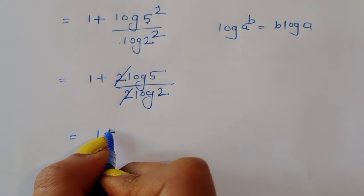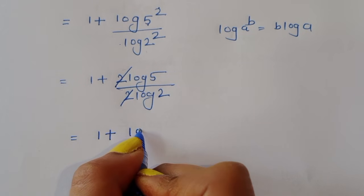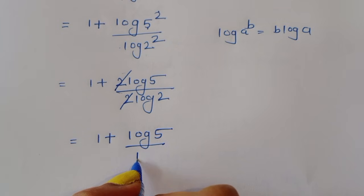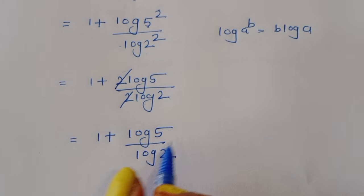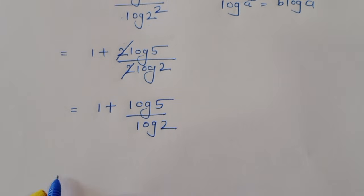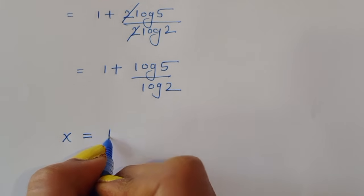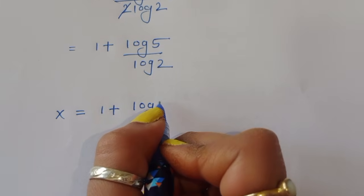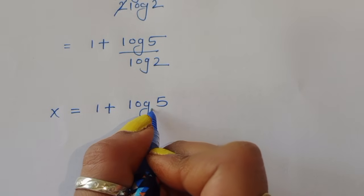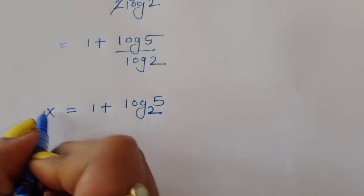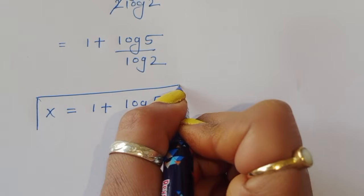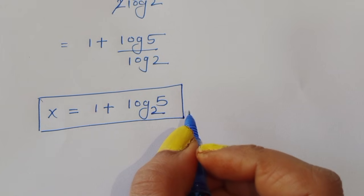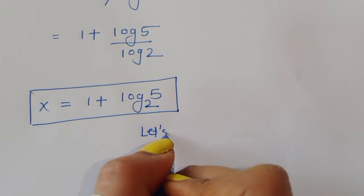So x is equal to 1 plus log of 5 divided by log of 2, or we can write x is equal to 1 plus log of 5 to the base 2. This is the final answer. Now let's verify whether this is correct.